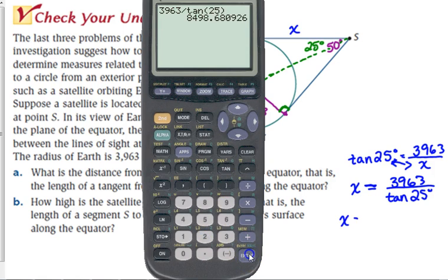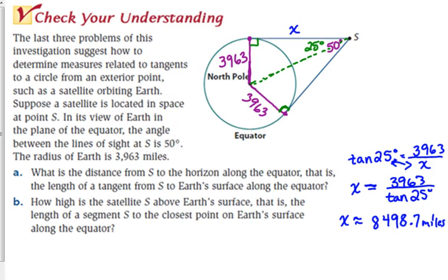25 radians is very different from 25 degrees. So we get that it is approximately 8,498.7 miles. That's part A.